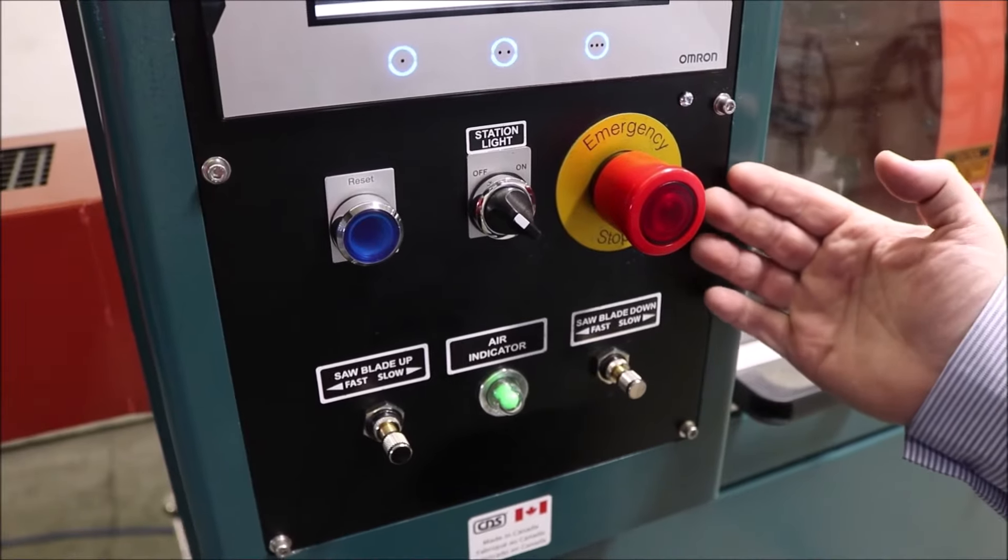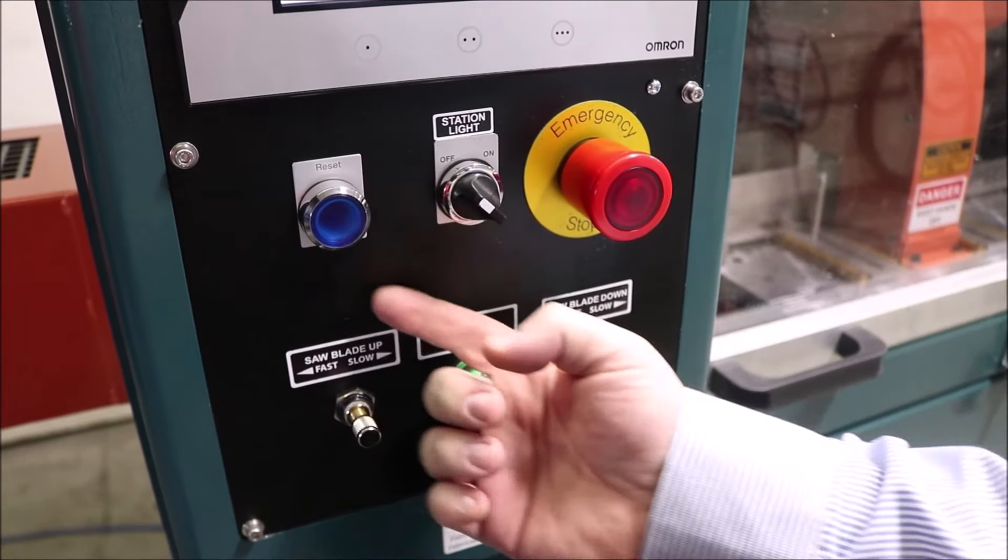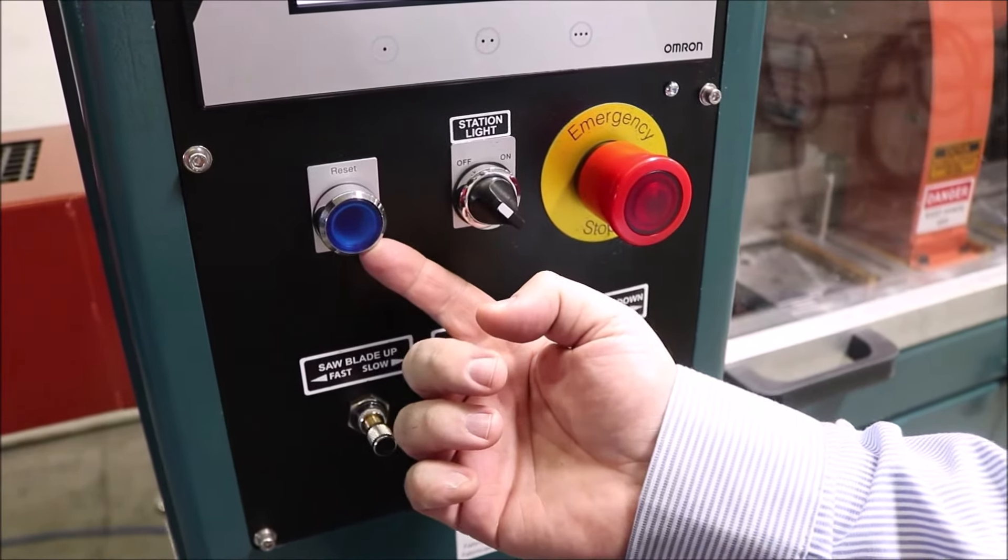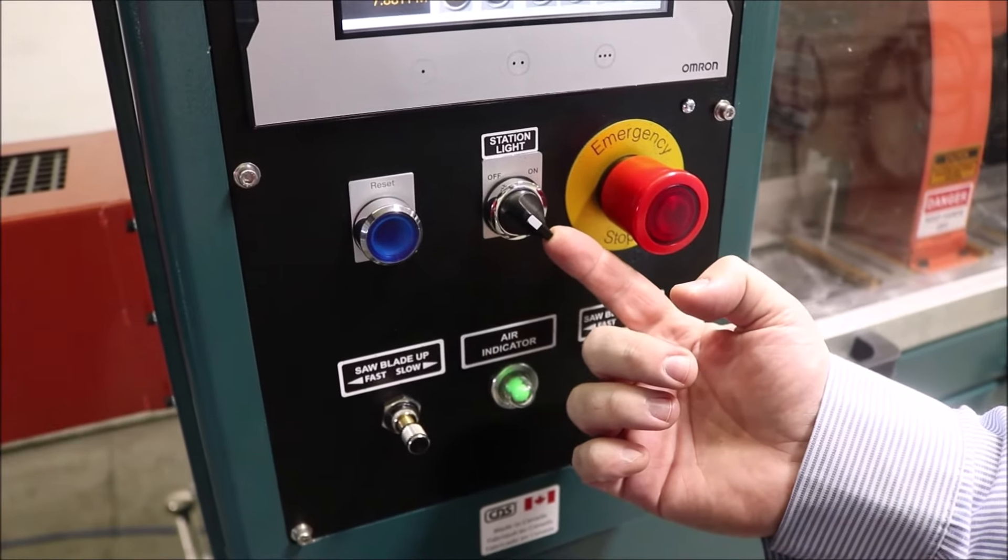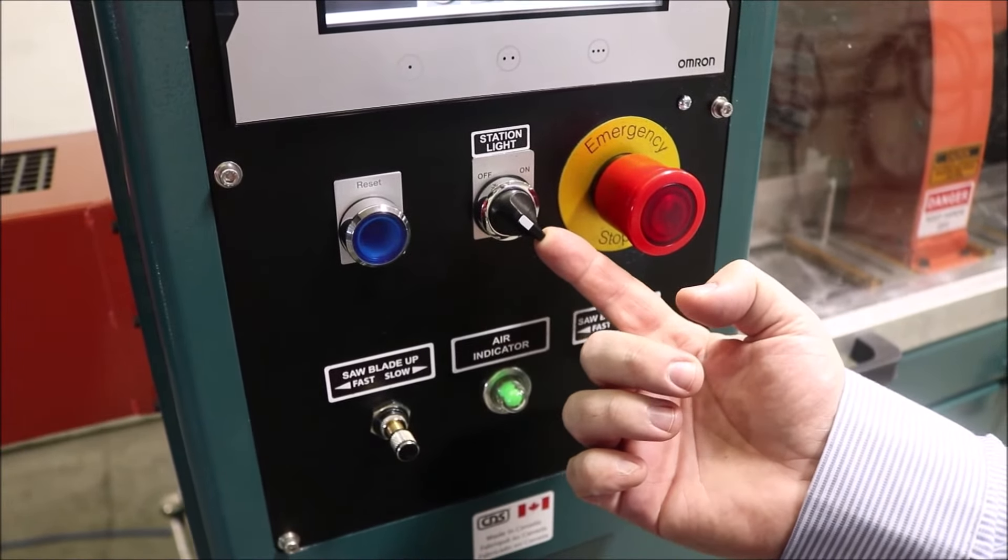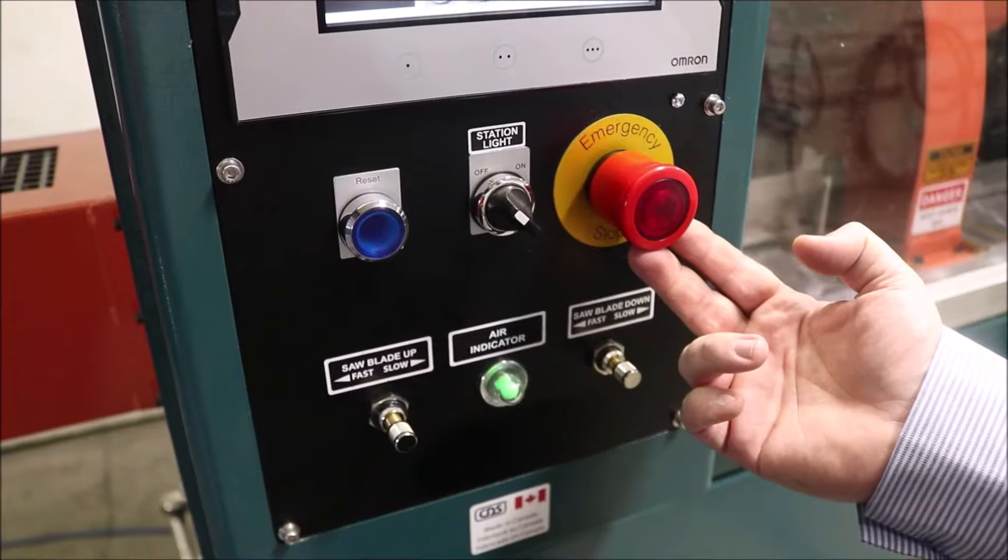Right under the touch screen you have three buttons. You have the reset button to clear any fault, another light station switch, and the emergency stop button.